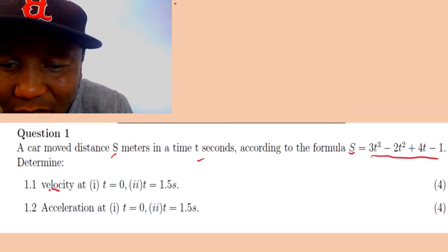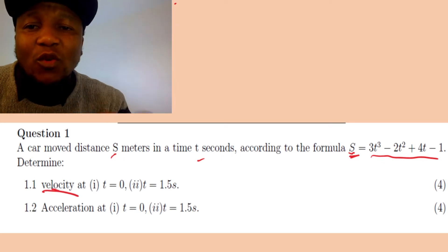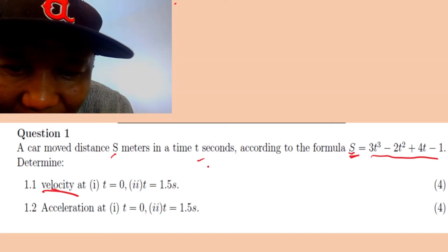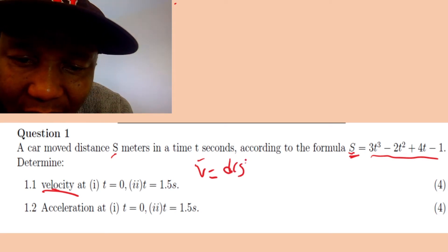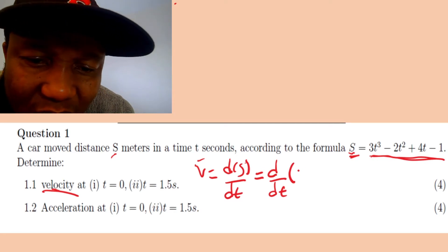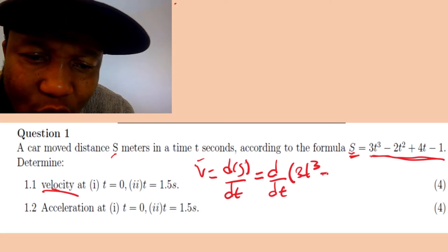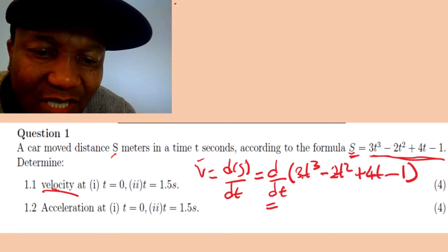They give us the distance and say find the velocity, which is easy. Velocity means you differentiate the distance — you take the derivative with respect to t. So I have to differentiate all of this, which is 3t³ minus 2t² plus 4t minus 1. When you differentiate 3t³, the 3 comes back multiplied and it's going to give us...